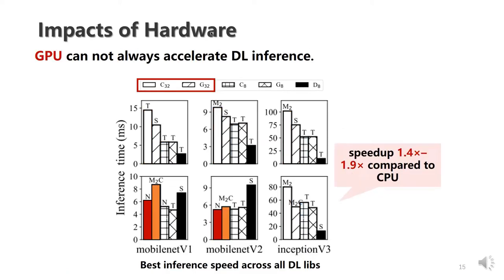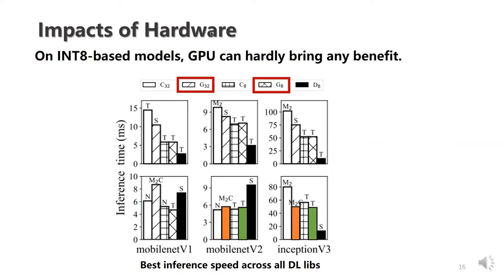We investigate how GPU affects performance across libraries. We focused on FP32 and GPU FP32. As known, GPU can indeed bring inference speedup, but in certain cases GPU even runs slower than CPU. On INT8-based models, GPU can hardly bring any benefits.